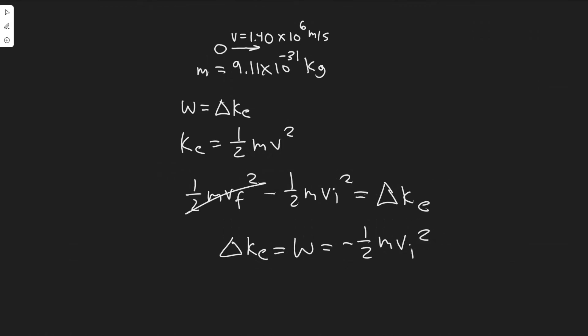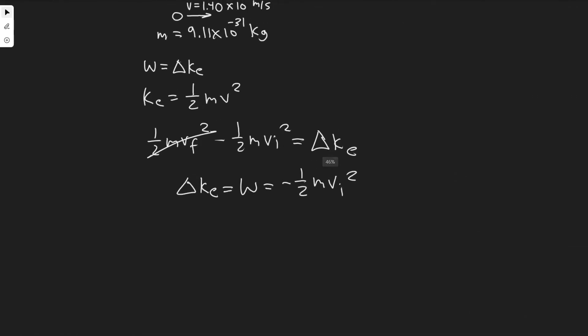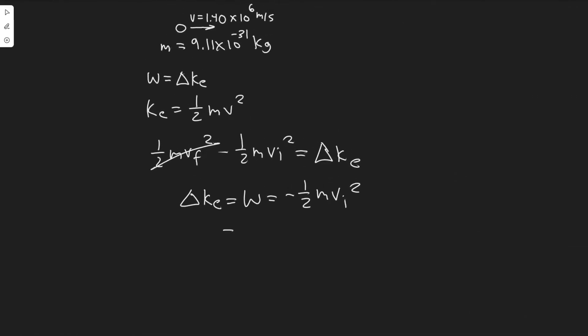And so, as long as we just plug in the values, we will be able to solve. So minus one-half times the mass, which they give us, 9.11 times 10 to the minus 31, and then multiply it by 1.4 times 10 to the 6 squared.